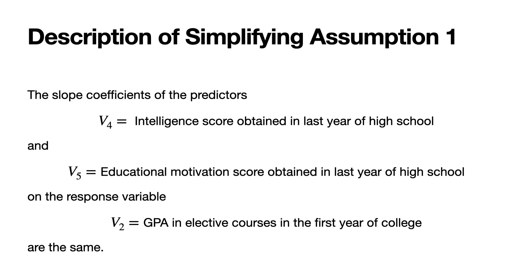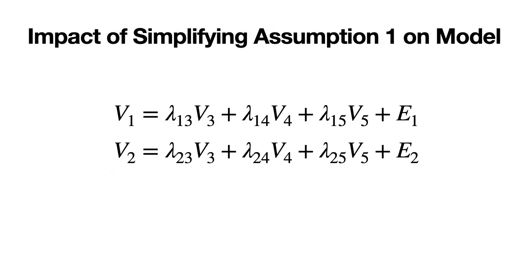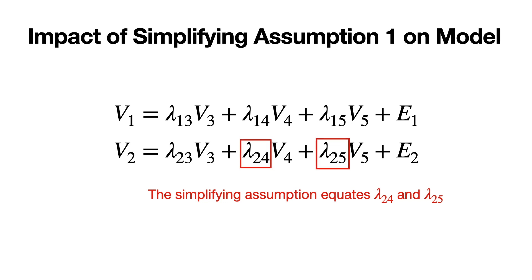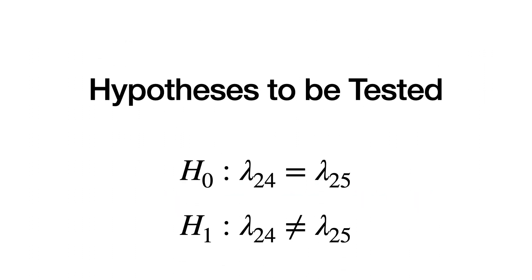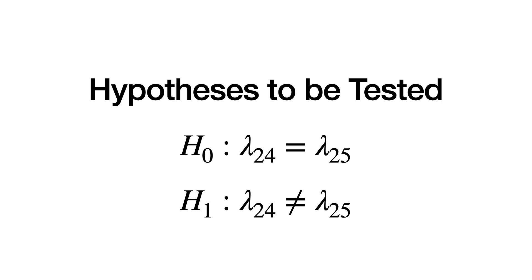Next, let's look at simplifying assumption one. Under simplifying assumption one, the slope coefficients of the predictors V4 — the intelligence score obtained in the last year of high school — and V5 — the educational motivation score obtained in the last year of high school — on the response variable V2, the GPA in elective courses in the first year of college, are the same. The simplifying assumption equates lambda 2,4 and lambda 2,5. The null hypothesis is that lambda 2,4 is equal to lambda 2,5. The alternative hypothesis is that lambda 2,4 and lambda 2,5 are not equal. There are 15 asterisks in the initial model, and therefore 15 parameters in the full model. After imposing this simplification, there are now 14 asterisks and therefore 14 parameters in the reduced model.